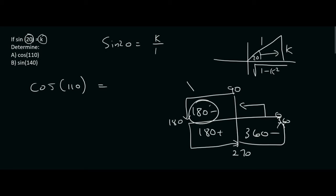110 is therefore in this quadrant, so we will rewrite it as 180 minus, but we're not going to say 180 minus 110. We're going to say 70 over here, because 180 minus 70 is 110.